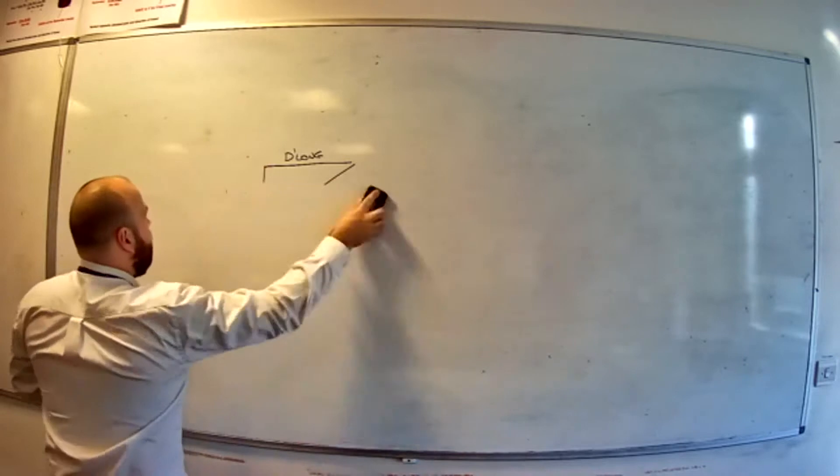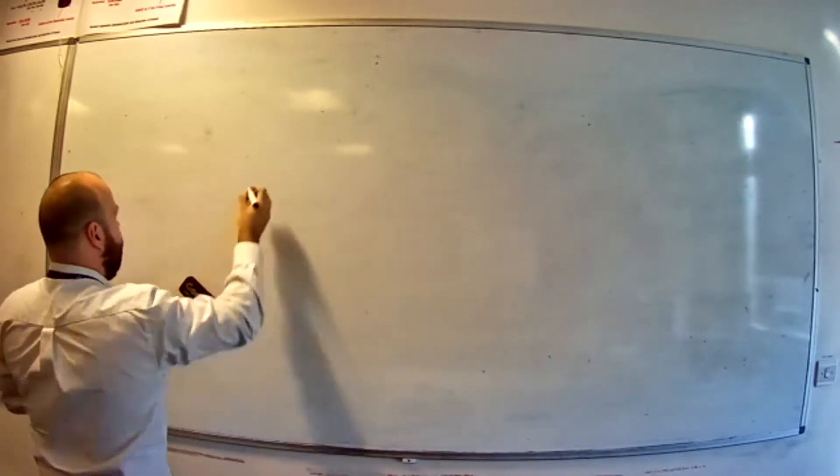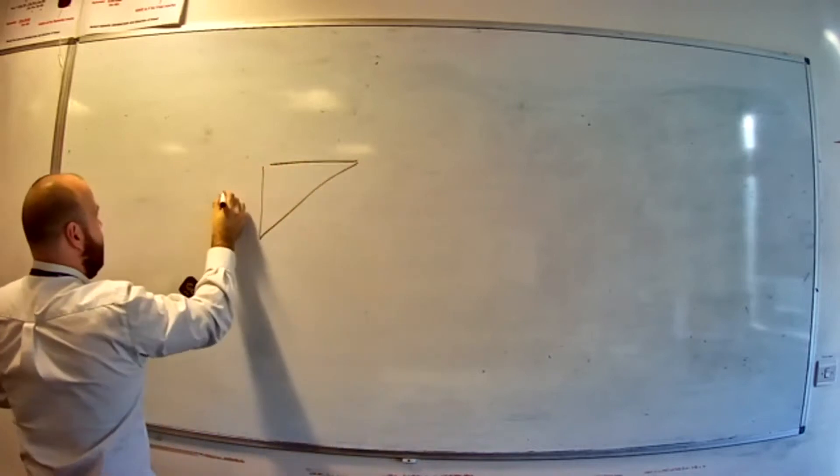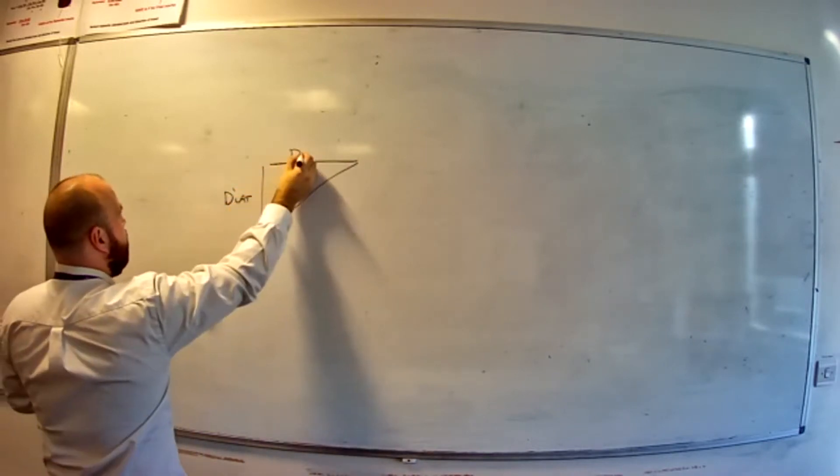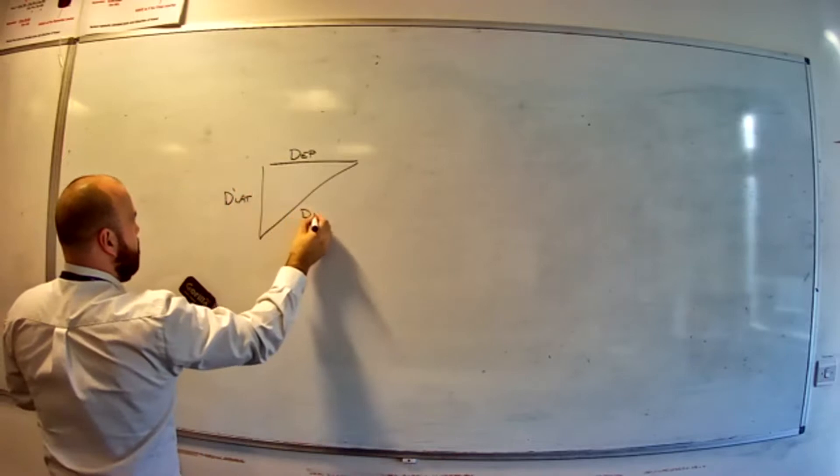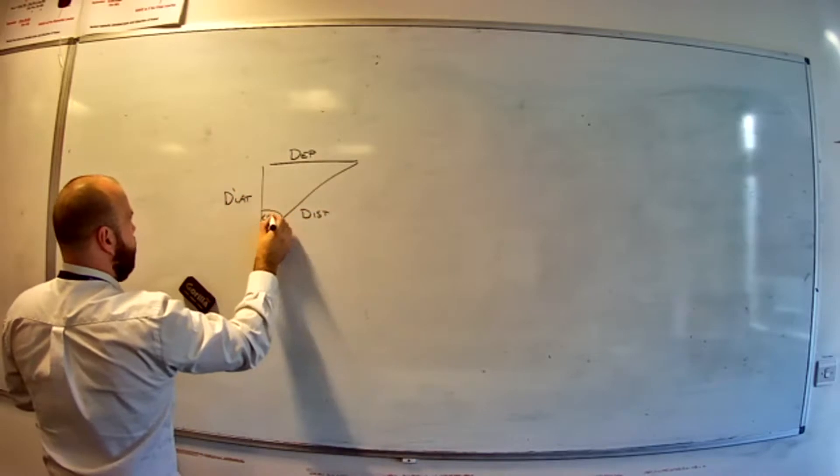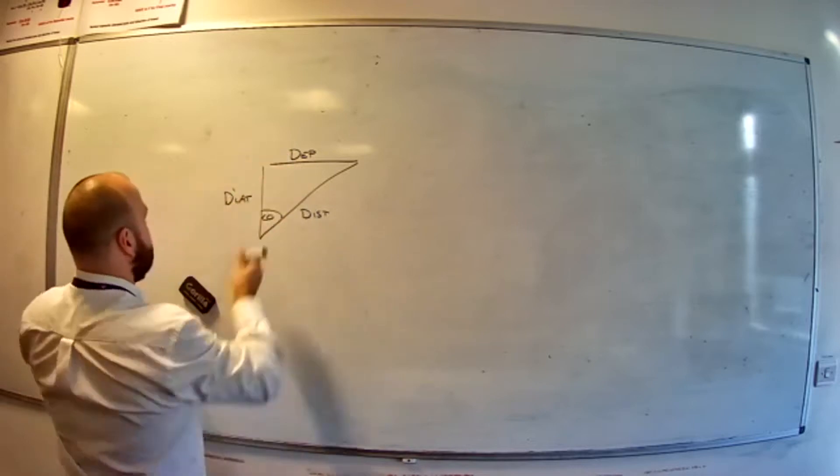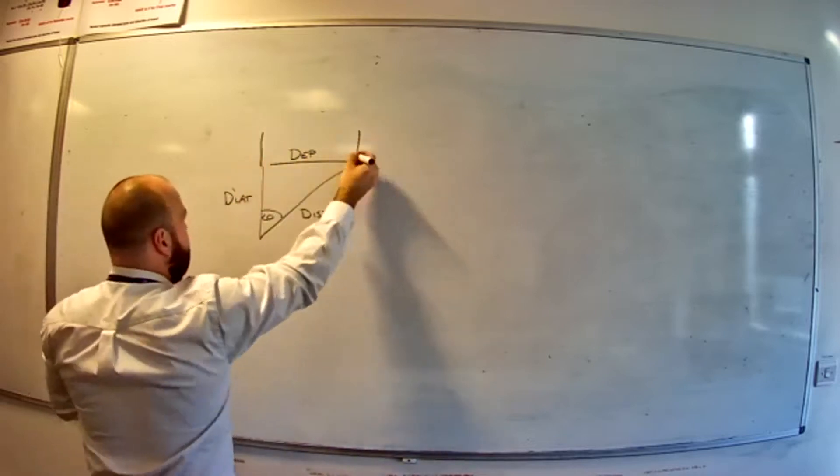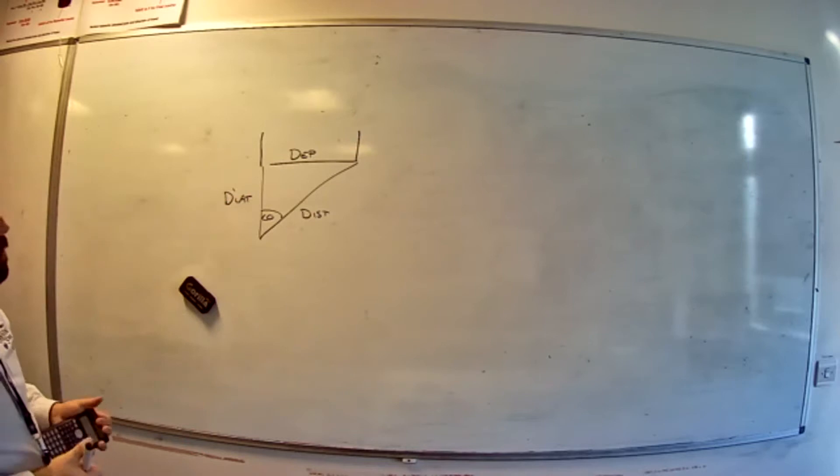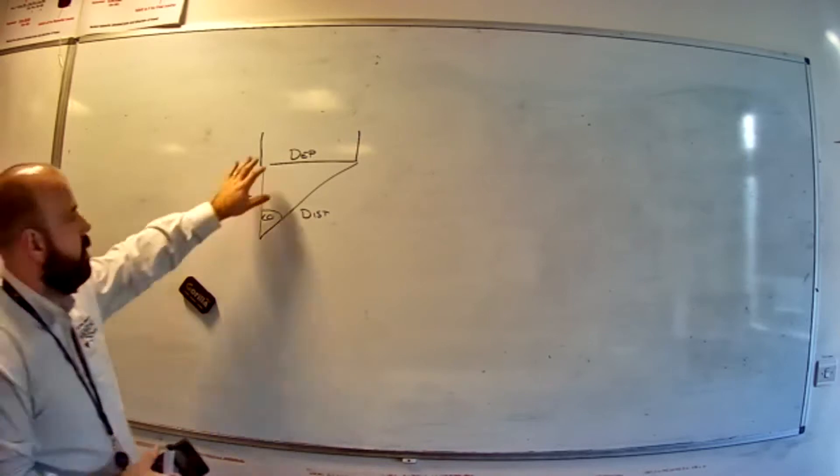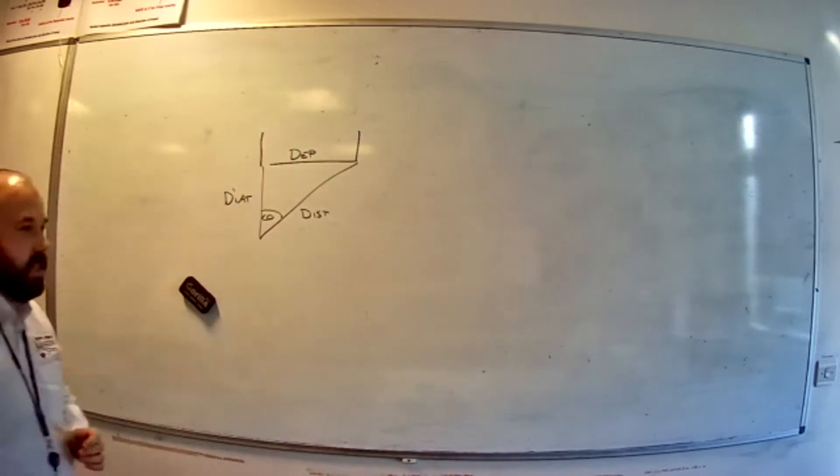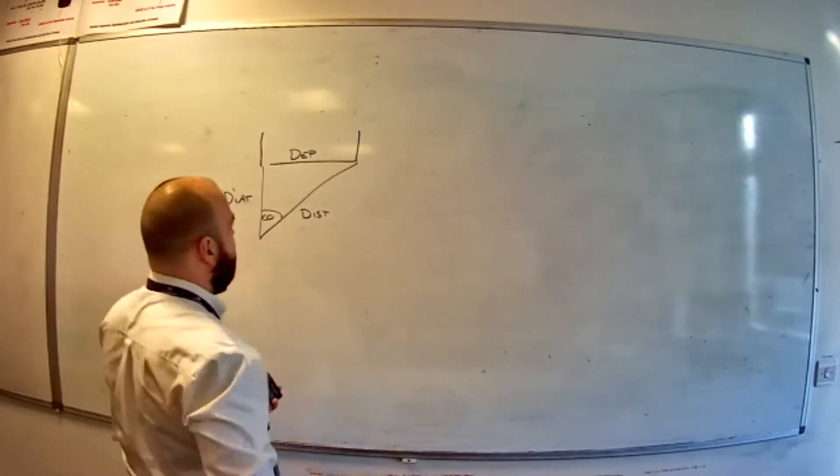Now, the way we do that is departure. If I had DLat here and departure here, my distance there and a course there, departure in miles is just the distance between this meridian and this meridian. In other words, we're just converting the DLong into miles, which is great for parallel sailing. We can just put it straight in and get the miles for east-west distance, and that's the end of it.